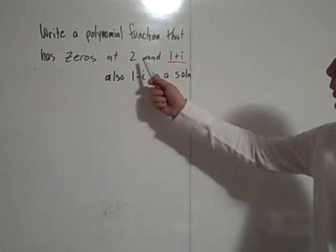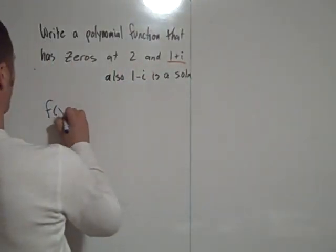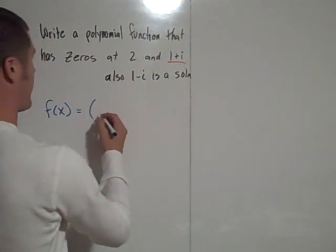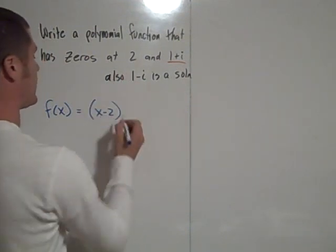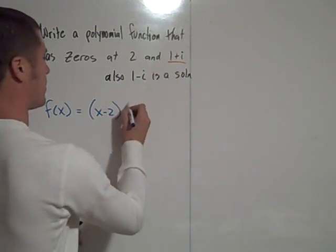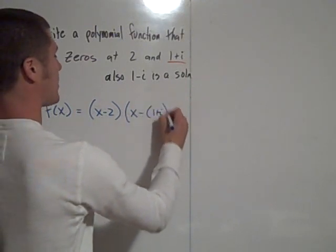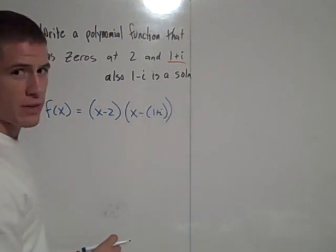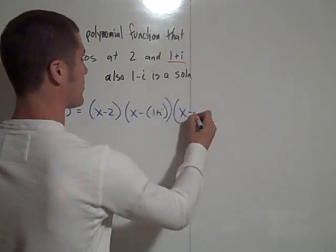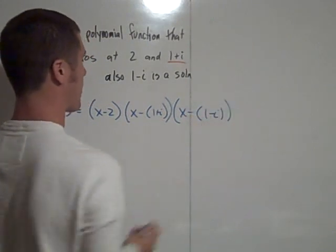So if 2 is a zero, we can write the factors out here. If 2 is a zero, that means x minus 2 is a factor. And if 1 plus i is a zero, that means x minus (1 plus i) is a factor. We also know that 1 minus i is a zero, so that means x minus (1 minus i) is a factor.